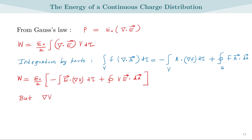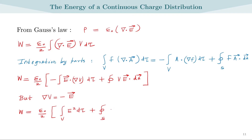We substitute the relation that the gradient of V equals negative E, and we also retain the surface integral term: plus the surface integral of V times E dot dA.